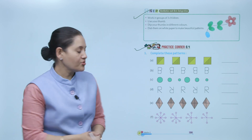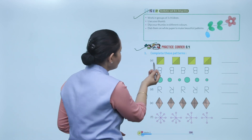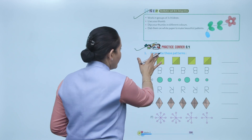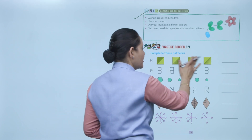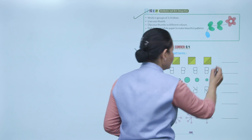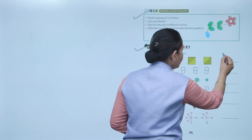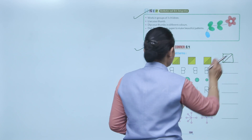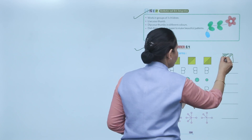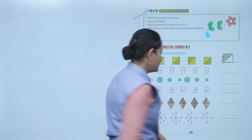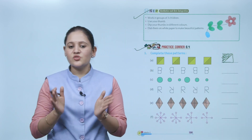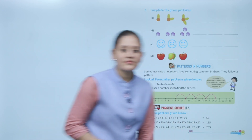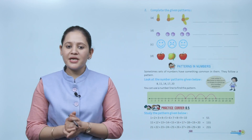Complete the pattern. Here a square is given — observe the lines: one, two, three, four, five, six, seven lines on each corner, then upside and downside. Again make seven lines upside. First observe the pattern and accordingly fill it. Next: complete the given pattern.